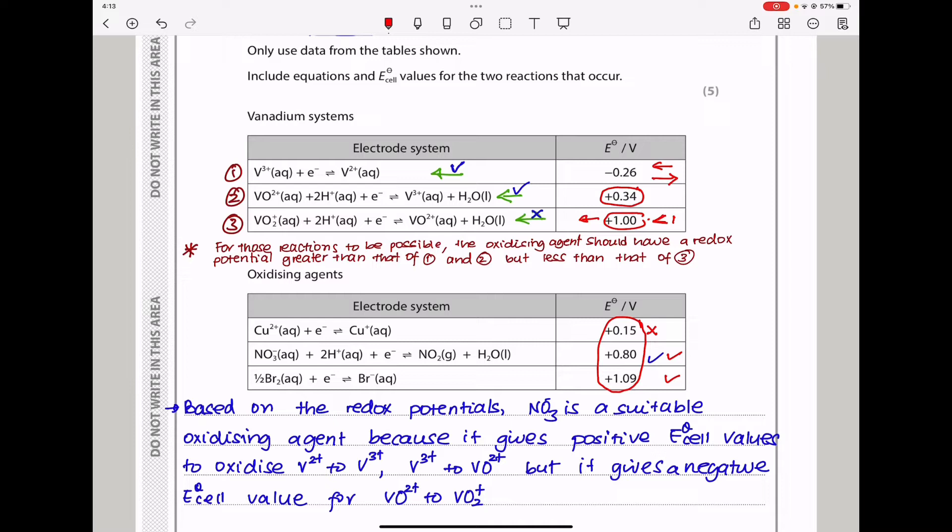But this and that are higher than plus 0.34, so we could use them. Because we do not want this reaction to occur in the opposite direction, we need to choose something whose electrode potential is lower than this one. So, when we see among the ones we have ticked, it's only this one that qualifies because that is higher. So, this is going to be the possible oxidizing agent.